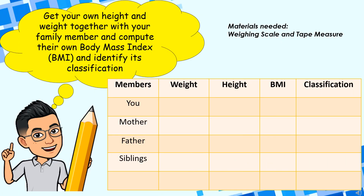Now let's have an activity. Materials needed: a weighing scale and a tape measure. Get your own height and weight together with a family member and compute their body mass index. Identify its classification and write it in your notebook. Please do it properly.